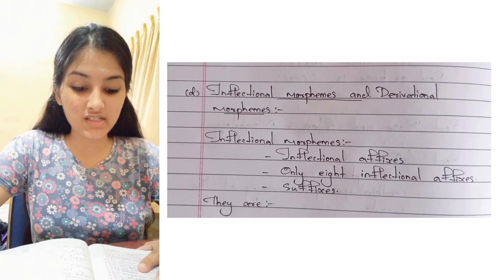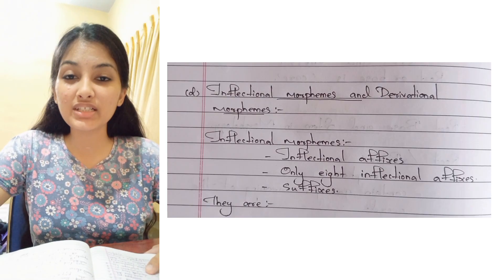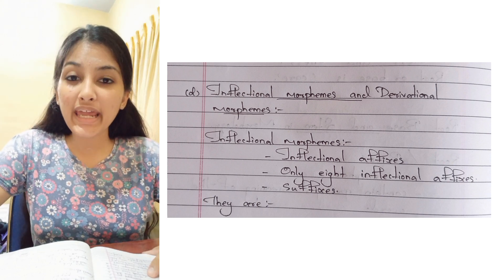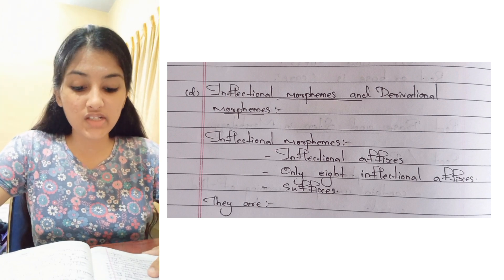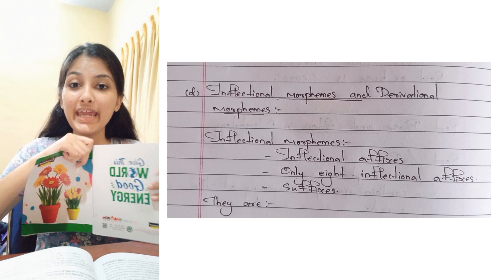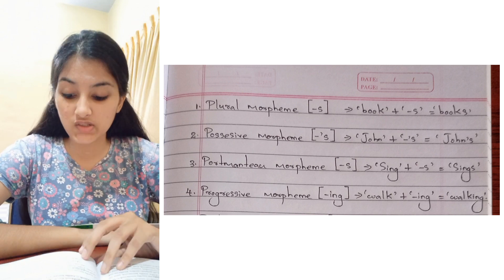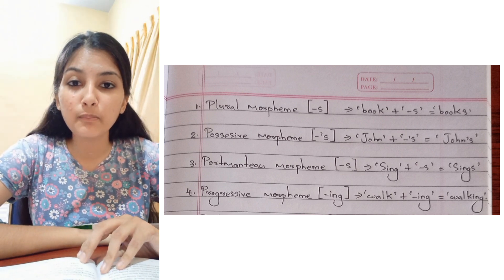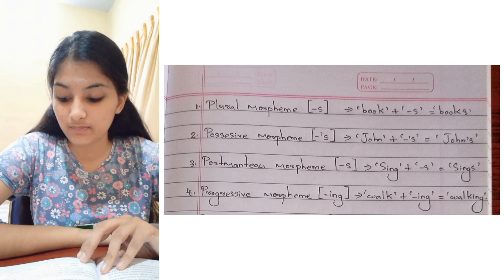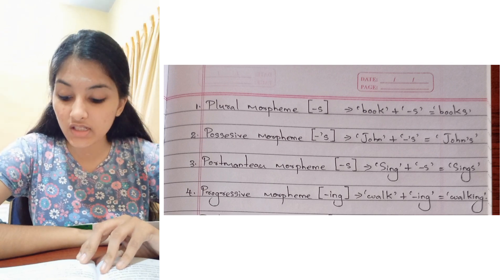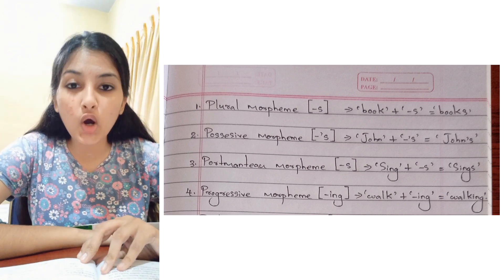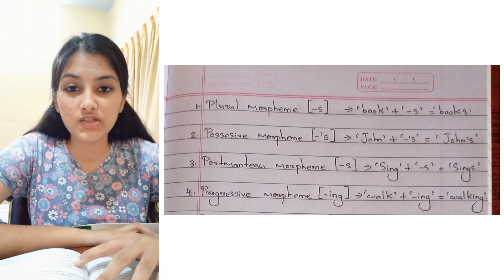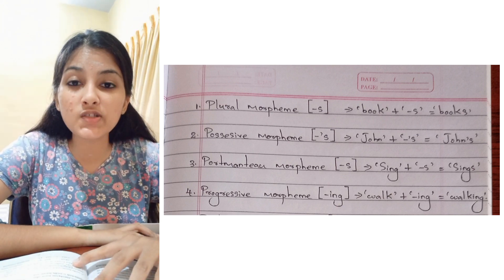Inflectional morphemes, also known as inflectional affixes. There are only eight inflectional morphemes in English and they are all suffixes. The first is the plural morpheme '-s': book + s = books, as in 'The books are on the table.' The second is the possessive morpheme apostrophe-s: John + 's = John's, as in 'These are John's books.'